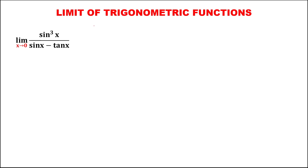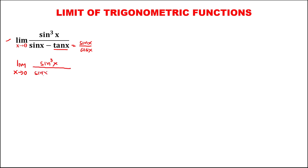To find the limit of this trigonometric function, since tangent x is equal to sine x over cosine x, we have the limit as x approaches 0 of sine to the power 3x over sine x minus 4 tangent x, where tangent x is sine x over cosine x.